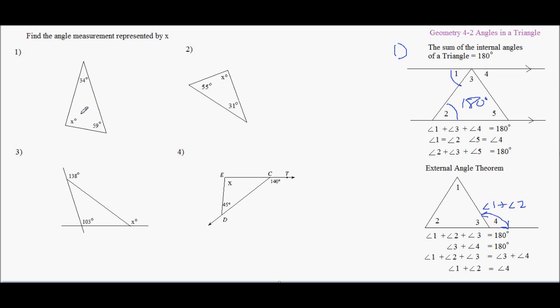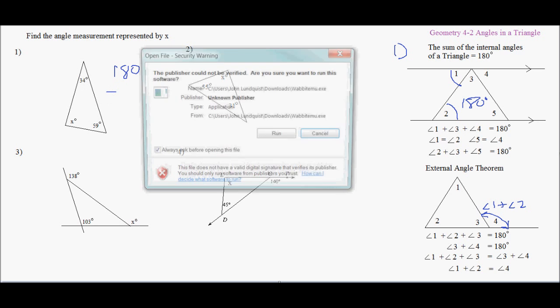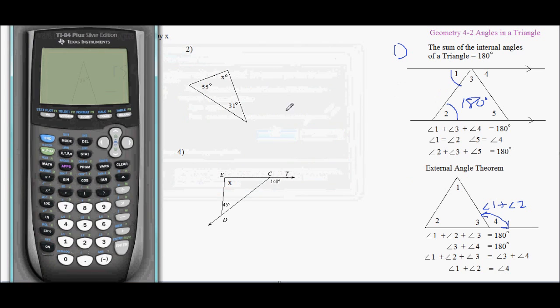It turns out to be pretty simple. If you have three angles, find the measurement of the angle represented by x. So 180 minus the sum of these two guys. If we just turn on our calculator and clear that out.